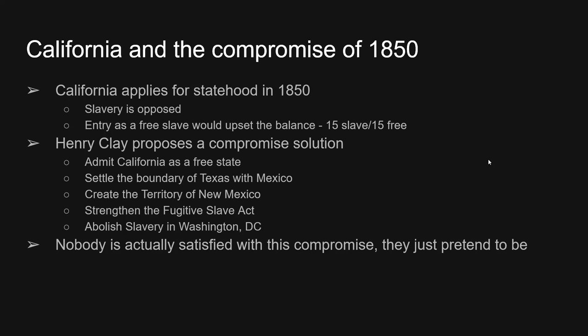We have a problem with California. California basically became a territory in 1848 with the Gold Rush, and by 1850 it already has enough people to become a state. So California is going to apply for statehood and they want to be an anti-slave state. That's not necessarily because they are anti-slavery — it's more that they're just anti-everyone. They don't want a bunch of people coming in and taking their gold claim. Plus, if California enters as a free state it's going to permanently upset that balance of slave versus not slave, which at the time was 15-15.